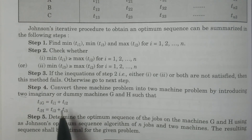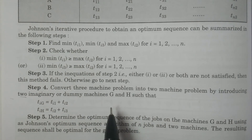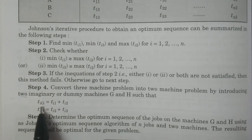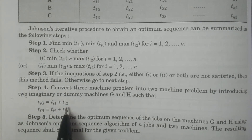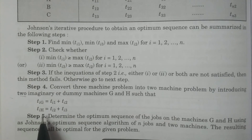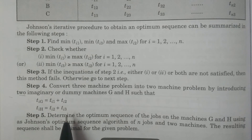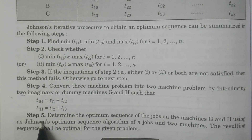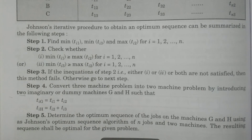To convert the three-machine problem into a two-machine problem, we introduce two dummy machines G and H. The processing time for dummy machine G is: TiG = Ti1 + Ti2, that is, we add the processing times of the first and second machines. The processing time for dummy machine H is: TiH = Ti2 + Ti3, that is, the second and third machine processing times are added. With these processing times, two dummy machines G and H are created.